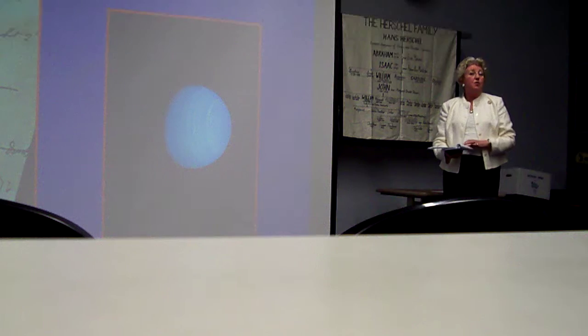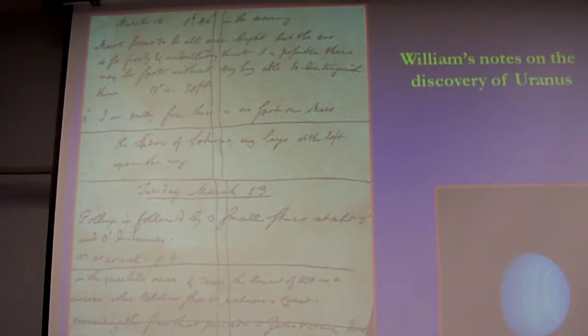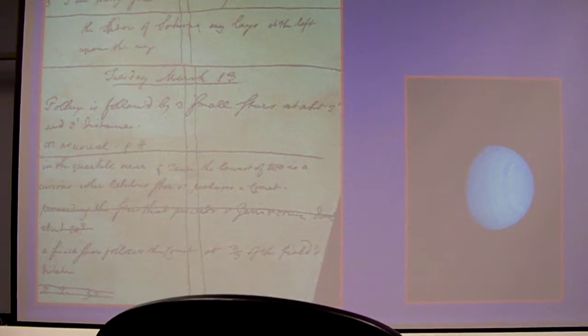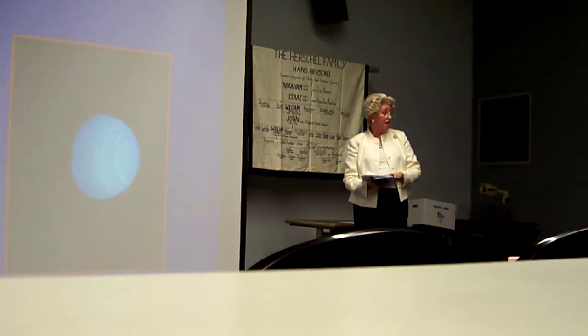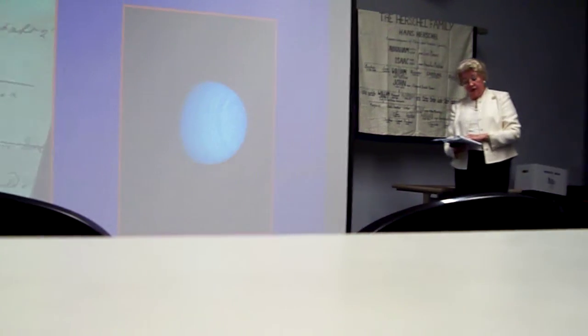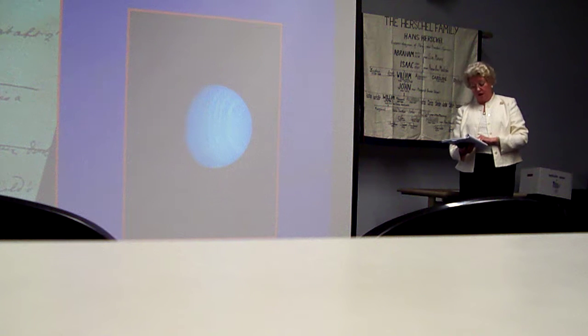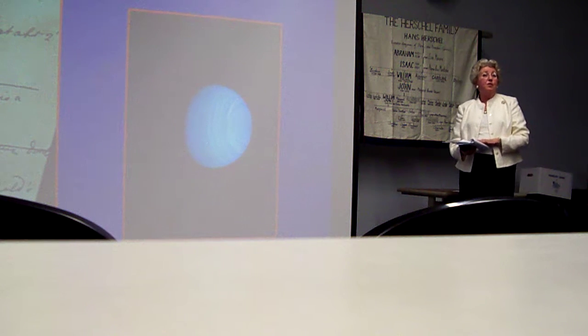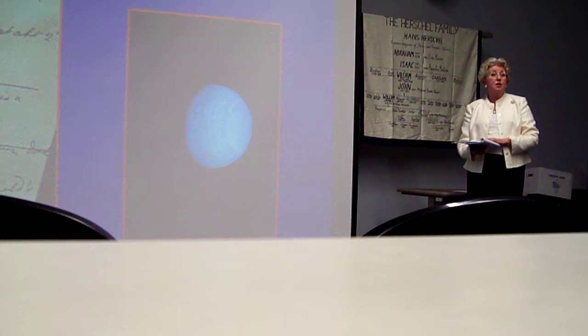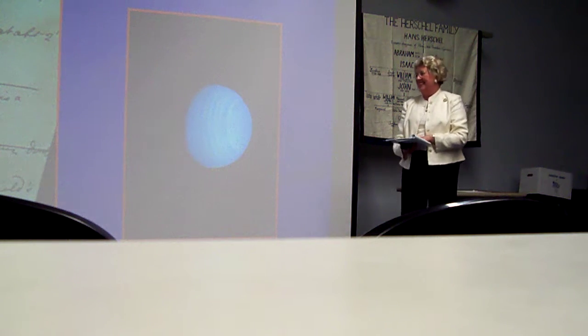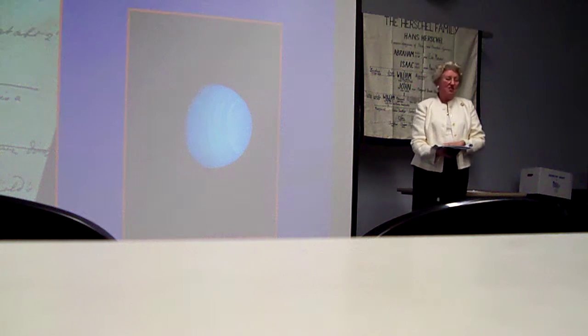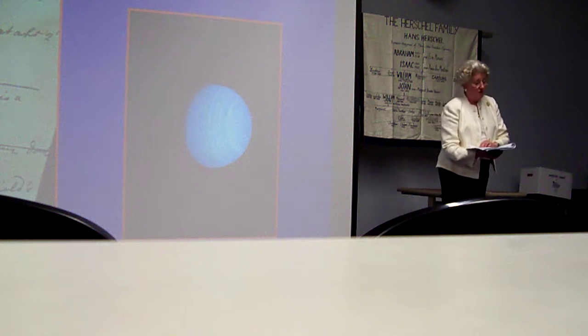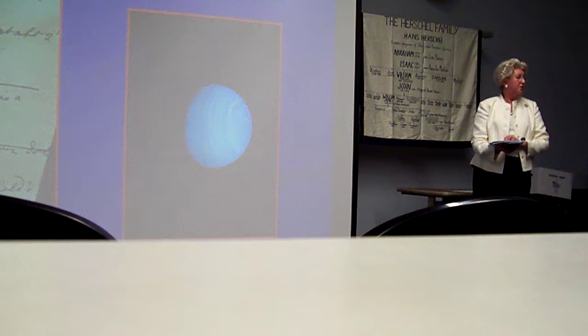So worldwide fame and immortality came William's way overnight. He was elected to be a member of the Royal Society and awarded their prestigious Copley Medal. Because he wasn't above flattery and self-aggrandizement, he named the planet Georgian Sidus or George's Star in honor of the king, George III. But there was a general unwillingness on the part of continental astronomers to call the planet George, so it took some time for a decision to be made that it should be called Uranus. Uranus in Greek mythology is the father of the gods, the ruler of the universe.